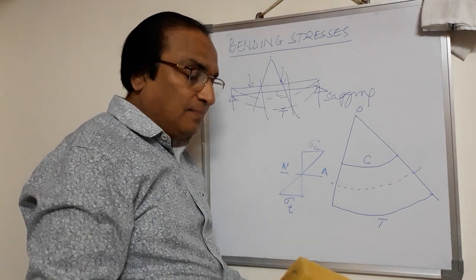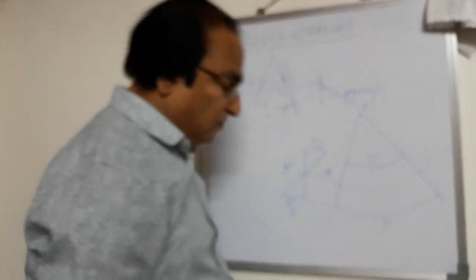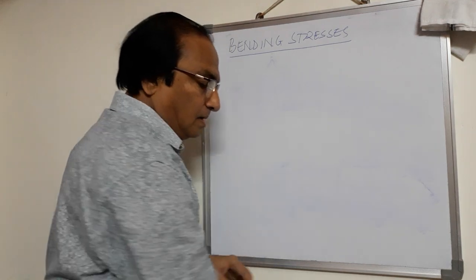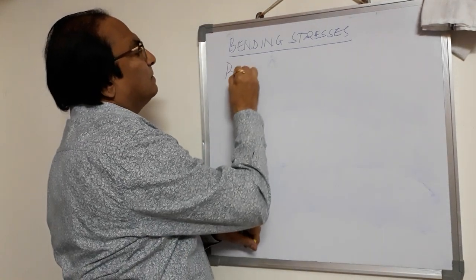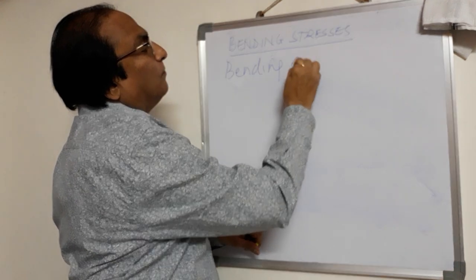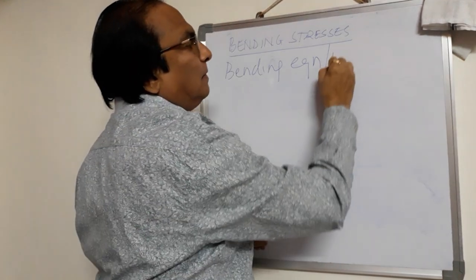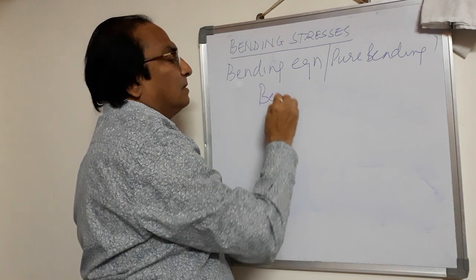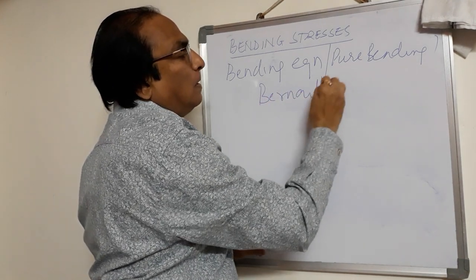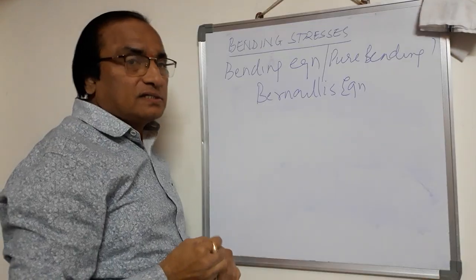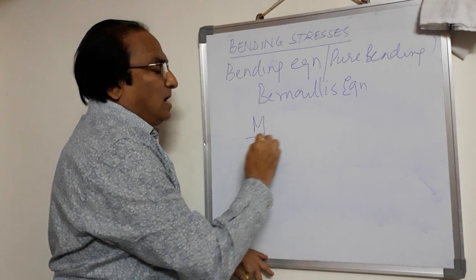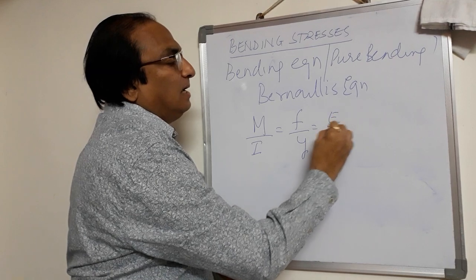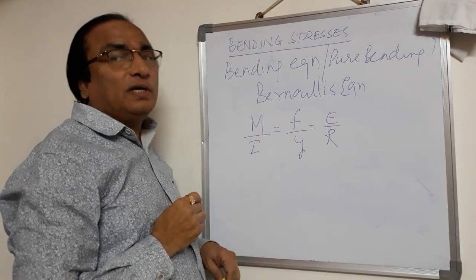Here we come across a very important theory based upon this principle, which we call the bending equation — also called pure bending. We also call the formula Bernoulli's equation. This is given as M/I = F/Y = E/R.